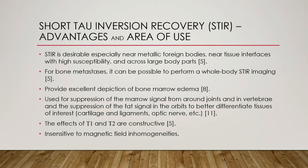STIR is desirable among other fat saturation techniques especially near metallic foreign bodies, near tissue interfaces with high susceptibility, and across large body parts. For bone metastases, it is possible to perform whole-body STIR imaging. STIR sequences provide excellent depiction of bone marrow edema, which may be the only indication of an occult fracture. It is also used for suppression of the marrow signal from around joints and in vertebrae, and the suppression of the fat signal in the orbits to better differentiate tissues of interest such as ligaments, bone metastases, and the optic nerve.